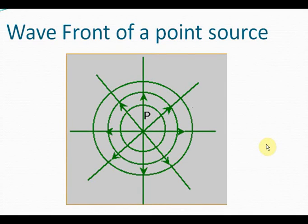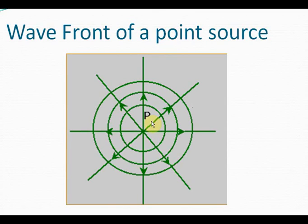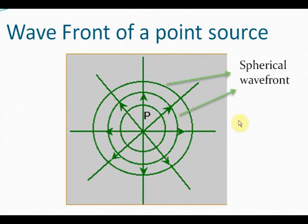Now, have a look at a point wave source. The point wave source will emit waves in all directions. A point source is the three-dimensional equivalent of a ripple wave source — the one we just saw. So, as in that case we had circular wave fronts, in case of a point wave source we will have spherical wave fronts. Every point on the sphere will be equidistant from the point wave source, and so it will be displaced equally from the mean position.